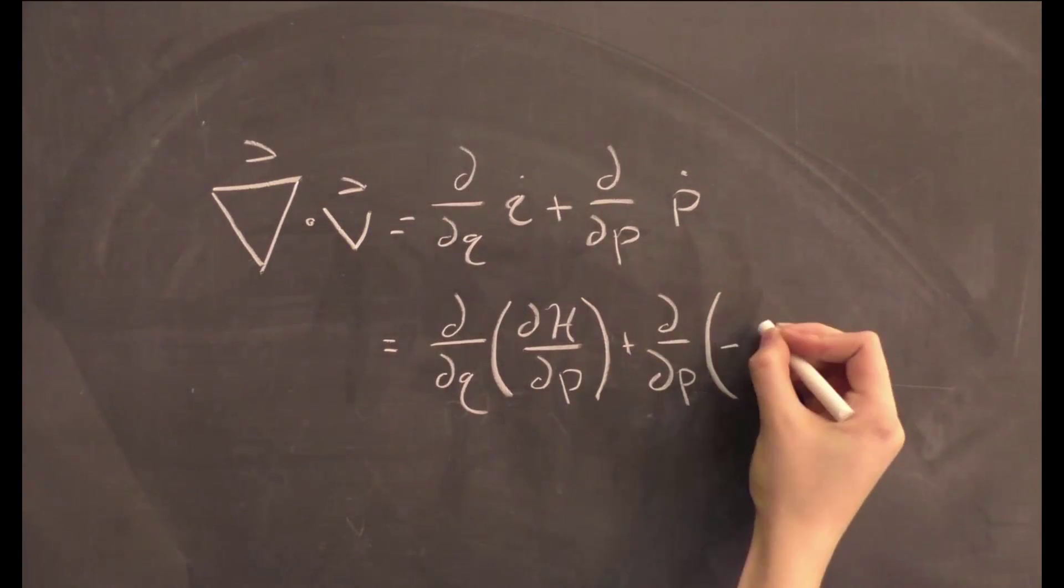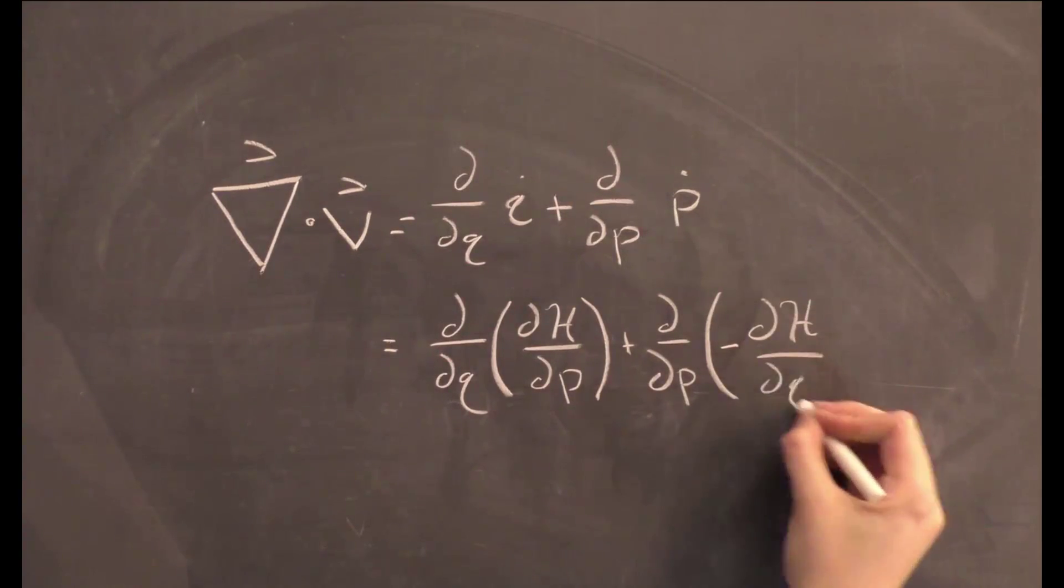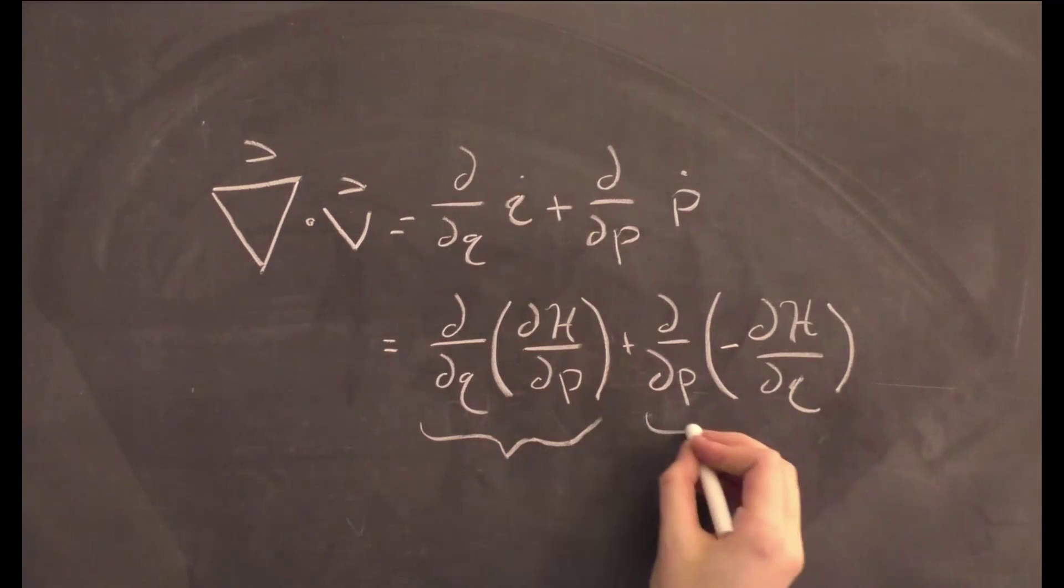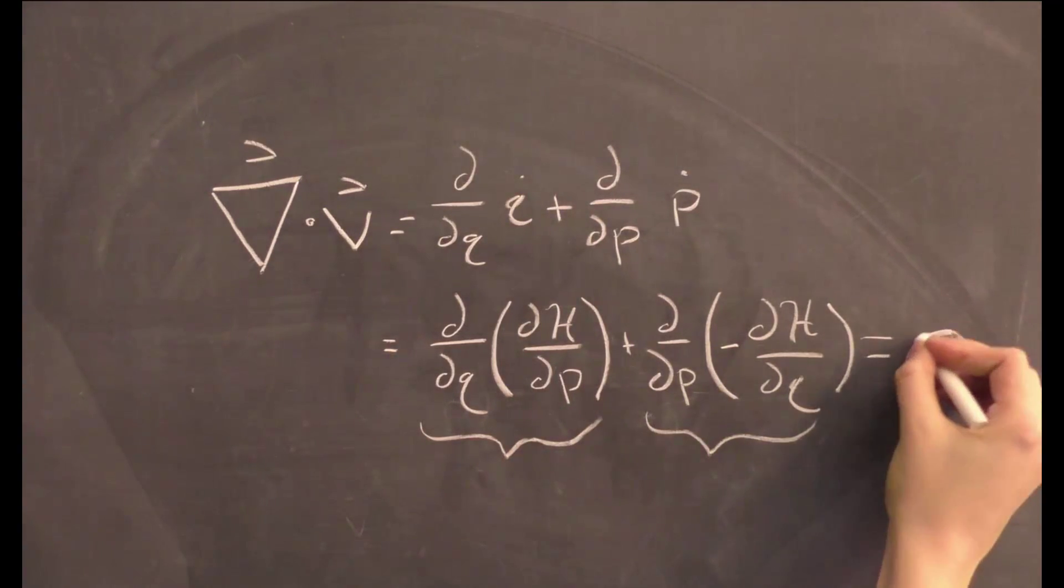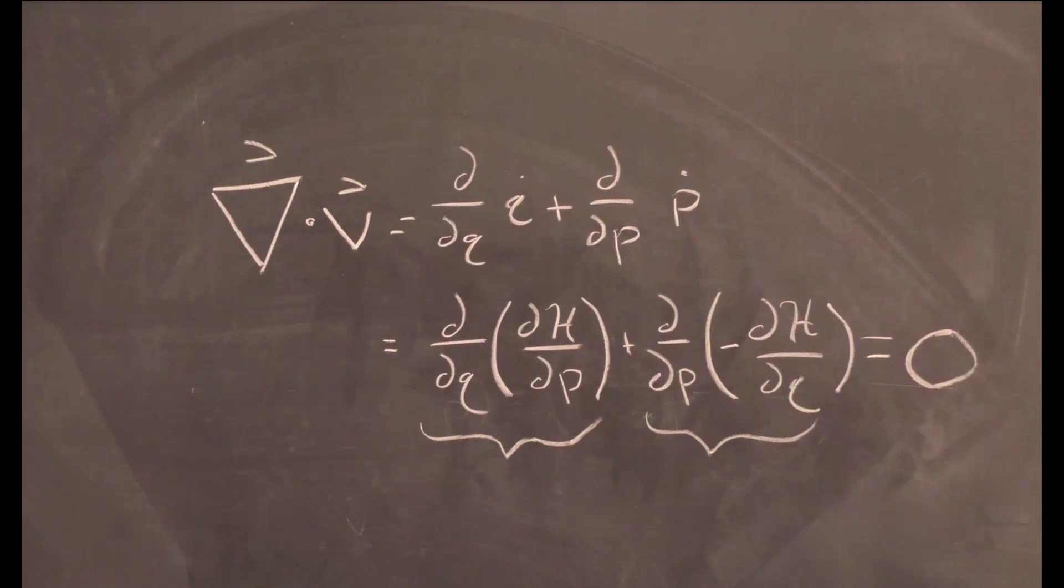We have two double derivatives here, and since the order in which the differentiations of a double derivative are performed doesn't matter, we see that this is equal to zero, and the change in volume of our surface is zero.